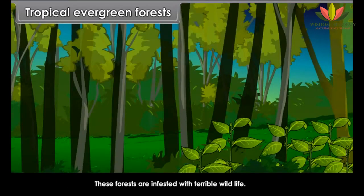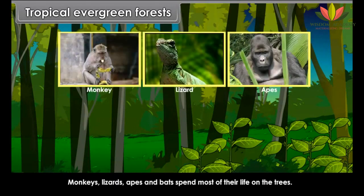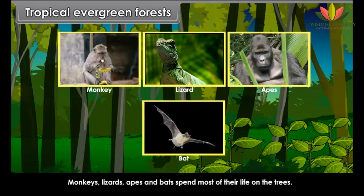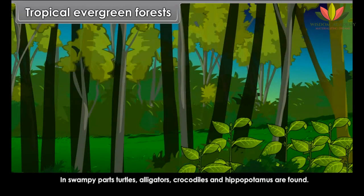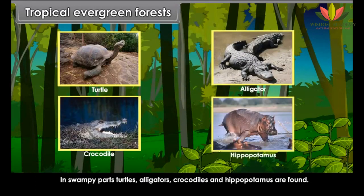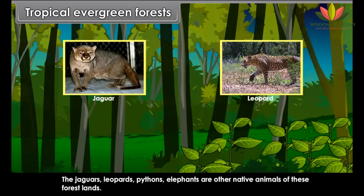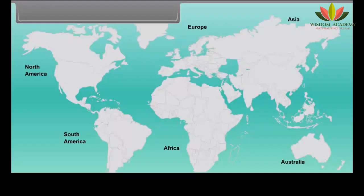These forests are infested with wildlife. Monkeys, lizards, apes and bats spend most of their life on the trees. In swampy parts, turtles, alligators, crocodiles and hippopotamus are found. Jaguars, leopards, pythons and elephants are the other native animals of these forest lands.